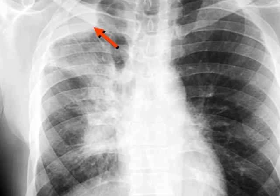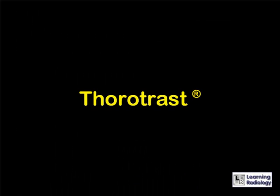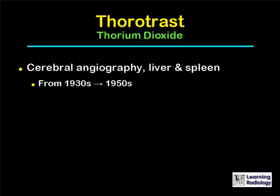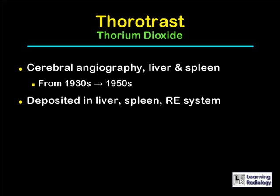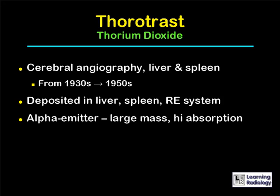There is also radiation fibrosis in the right apex. Thorotrast represents an unfortunate chapter in the history of radiology. Thorotrast is thorium dioxide, used from the 1930s through the 1950s as an excellent contrast agent for cerebral angiography and for visualizing the liver and spleen. One side effect was a desmoplastic, fibrotic reaction if it partially extravasated into soft tissue. It was deposited in the liver, spleen, and reticuloendothelial system, and besides being radio-opaque, it was in fact radioactive, producing alpha particles.